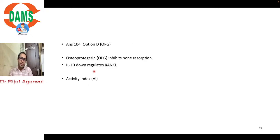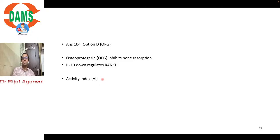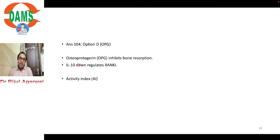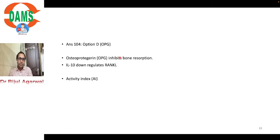A related question that came in the AIIMS exam in 2018: the activity index is the ratio of IL-1 beta to IL-1 RA. The higher the activity index, the more rapid the tooth movement, as it causes more bone resorption. Another interleukin that down-regulates RANKL and inhibits bone resorption is Interleukin-10. Just remember: osteoprotegerin and Interleukin-10 inhibit bone resorption; all other biomarkers promote it.